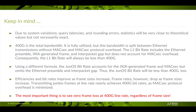Efficiencies and bit rates improve as frame sizes get bigger. Frame rates, however, decrease as frame sizes get bigger. If we transmit jumbo frames, we see that the bit rates get close to 400G, which is expected — more of the bandwidth is being used to transmit the original Ethernet frame, and less is dedicated to protocol overhead like MaxSec headers, the Ethernet preamble, and the inner packet gap. By far, the most important thing is to see zero frame loss when sending at 400G line rate — if we're sending at line rate, we do not expect any lost packets.